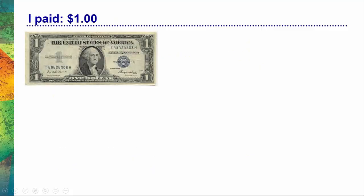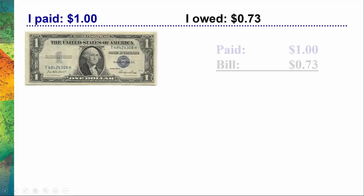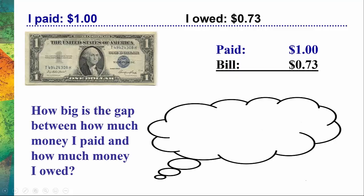So for example, let's say I paid $1 for a bill that was 73 cents. I need to ask myself, how big is the gap or the difference between how much money I paid and how much money I owed? For a lot of people, it's difficult to just see in their mind the difference between $1 and 73 cents. So what I like to do is take 73 cents and round it up to a number that's easier to work with — 80 cents. It's very easy in my mind to see the difference between 80 cents and $1, and that's a difference of 20 cents. So the people owe me back at least 20 cents as change.